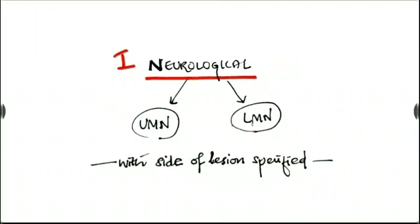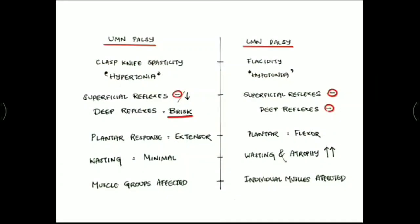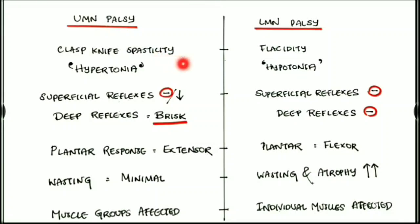Regarding the neurological one, we have to find out whether it is a UMN palsy or LMN palsy. UMN means upper motor neuron whereas LMN means lower motor neuron, with the side to be specified. Regarding UMN palsy, we can see clasp knife spasticity, which is hypertonia, whereas in LMN palsy it is flaccidity causing hypotonia. In UMN palsy, the superficial reflexes are reduced or absent whereas the deep reflexes are brisk or exaggerated.